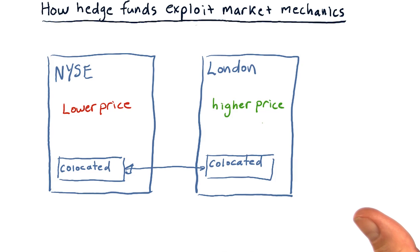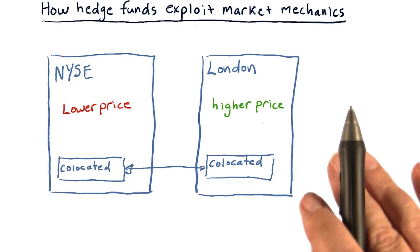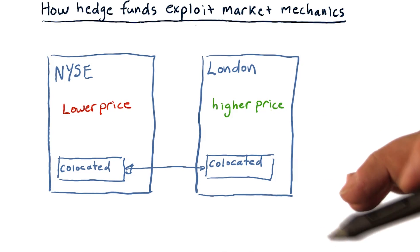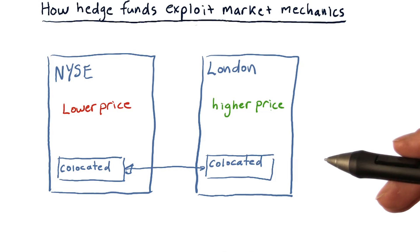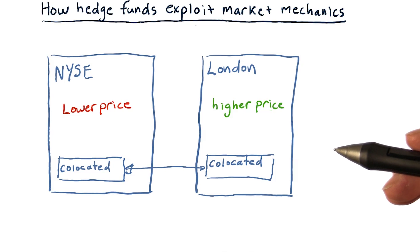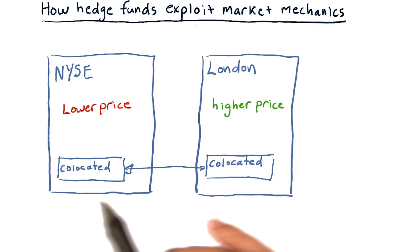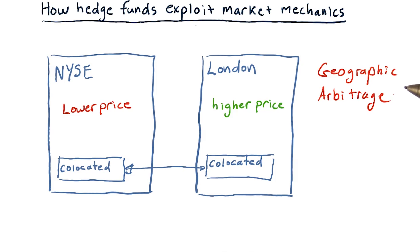Because hedge funds do this — monitoring prices at exchanges all over the world — these sorts of differences rarely arise. And when they do, it's just by fractions of a cent. But those differences do arise because there are inefficiencies in the markets, and there are hedge funds there to pick those pennies up off the ground. Again, this is geographic arbitrage.